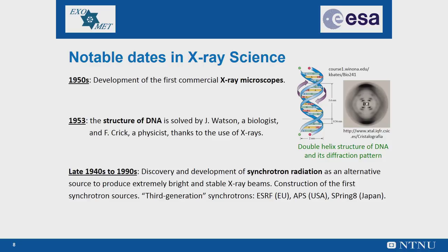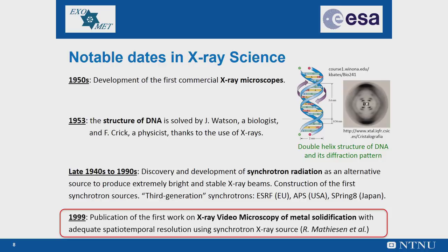In the mid to late 1970s, scientists began to discuss ideas for using synchrotrons as an alternative source to produce extremely bright X-rays. These discussions led to the construction, in the late 80s and early 90s, of the ESRF, European Synchrotron Radiation Facility, and shortly thereafter two other third-generation synchrotrons: the Advanced Photon Source in the United States and Spring-8 in Japan. In 1999, the first work on X-ray video microscopy of metal solidification with adequate spatiotemporal resolution using a synchrotron X-ray source was published.